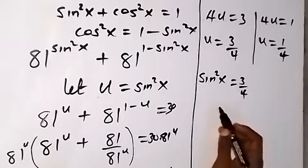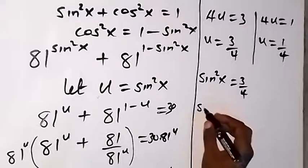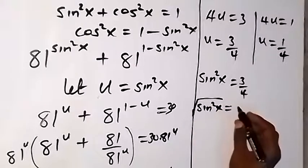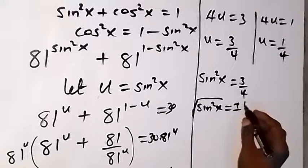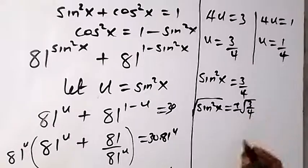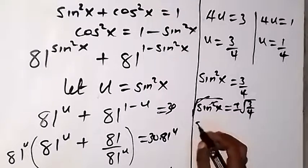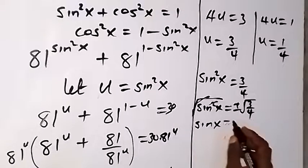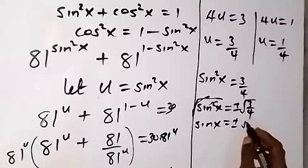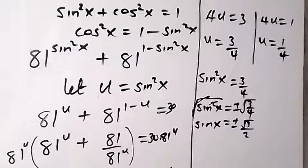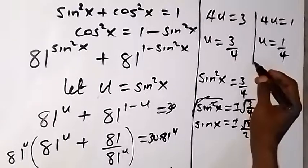From sin²x equals 3/4, taking the square root on both sides gives sin x equals plus or minus √3/2. Since √4 equals 2, we have sin x equals plus or minus √3 over 2.